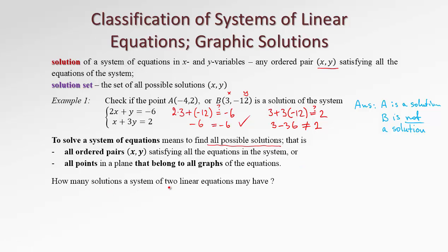How many solutions can a system of two linear equations have? That depends on the two lines. If the lines are parallel, there are no solutions because they don't intersect. Or the two lines may cross each other in one place — that gives one solution. Or possibly the two equations represent one and the same line, so every single point belonging to one line also belongs to the other. In that case, we have infinitely many solutions. So we may have zero solutions, one solution, or infinitely many solutions.